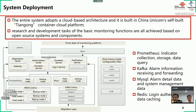The project adopts containerized development, with Prometheus bound with two hosts to achieve indicator collection, query, and storage. Redis takes responsibility for login, authentication, and data caching. MySQL achieves storing the detailed data of the alarms and system management information. Kafka receives and summarizes alarm information and forwards it to the work order system.